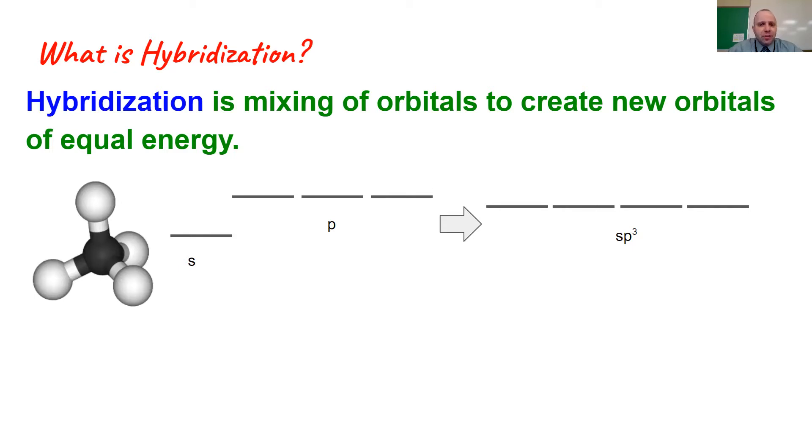So if we were to look, for example, at this example of methane, methane has a carbon atom in the center. Carbon would have a single s orbital and three p orbitals. What we find is when methane bonds, it doesn't form two different types of bonds. It forms four equivalent bonds.